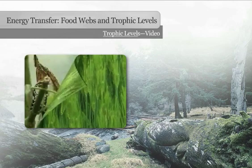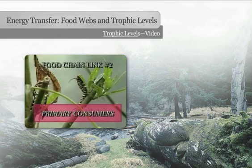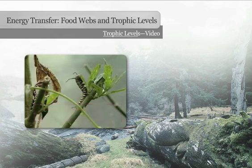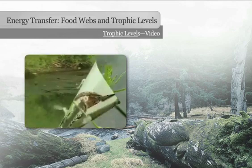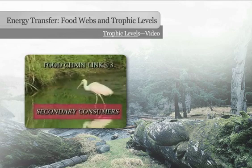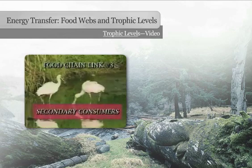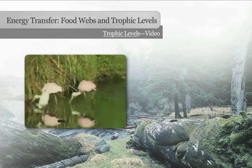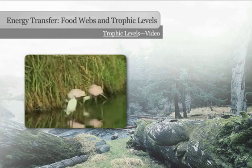The second link in a food chain are the primary consumers. In this way, both energy and matter begin to move up the food chain. Next are the secondary consumers — they eat the primary consumers. Oftentimes birds like these are secondary consumers because they eat insects and other organisms that live on a diet of plants.